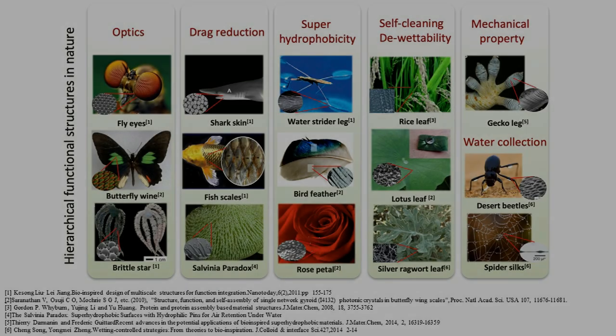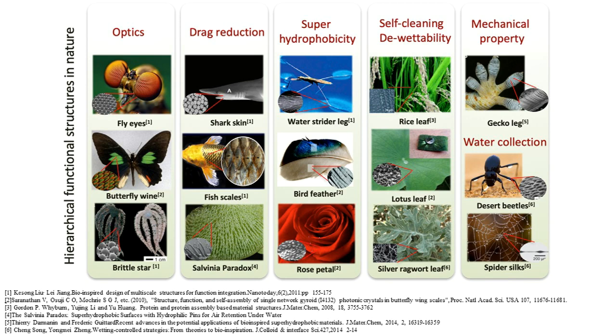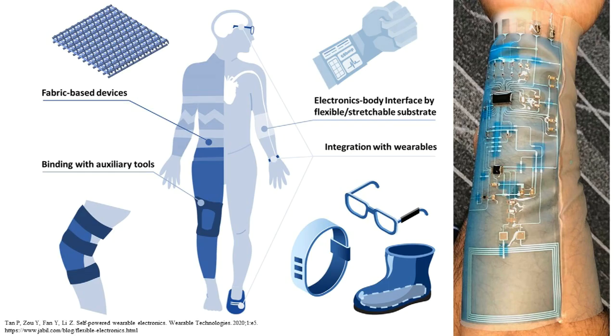The authors envision the large-area high-resolution 3D printing ability endowed by the Hopping Light process can boost more applications such as biomimetic structures and wearable electronics.